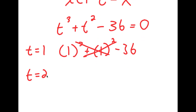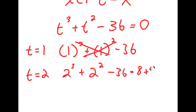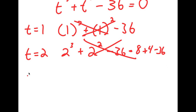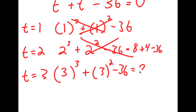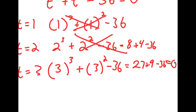For t equals 2, I get 2 to the power of 3 plus 2 squared minus 36, which is 8 plus 4 minus 36, and that's not equal to 0. For t equals 3, I get 3 to the power of 3 plus 3 squared minus 36, which is 27 plus 9 minus 36, which is equal to 0. So t equals 3 is one solution.